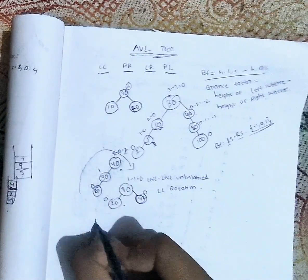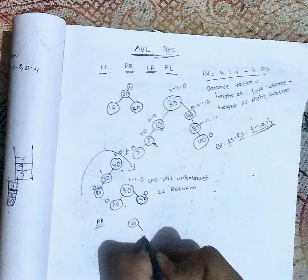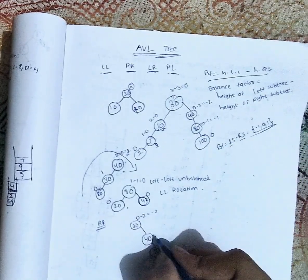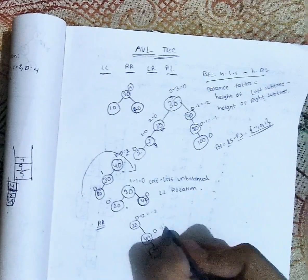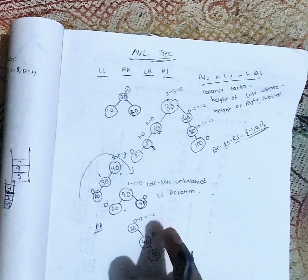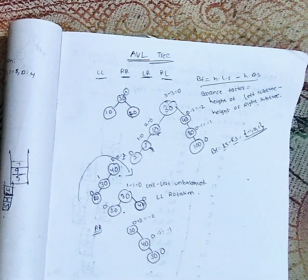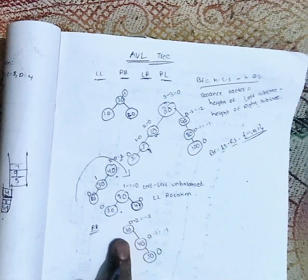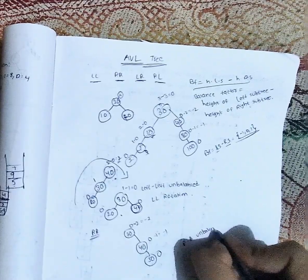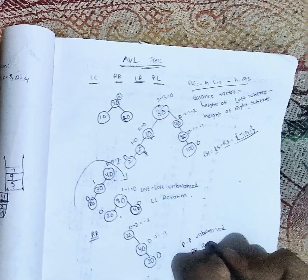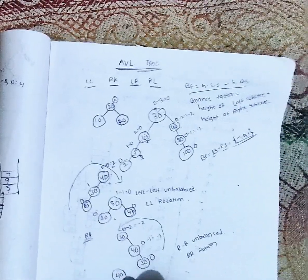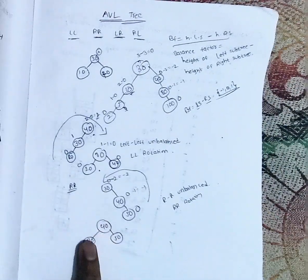Now let us do RR rotation. If I take 30, 40, 50: the root 30 has balance factor 0 minus 2 equals minus 2, and node 40 has 0 minus 1 equals minus 1, and node 50 has balance factor 0. Since minus 2 is not a valid balance factor, the tree is unbalanced. The imbalance is right-right, so we use RR rotation — 40 becomes the middle root, 30 goes left, and 50 goes right.